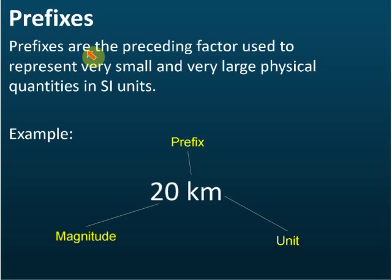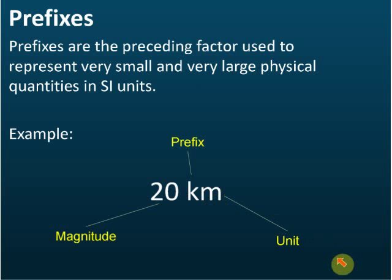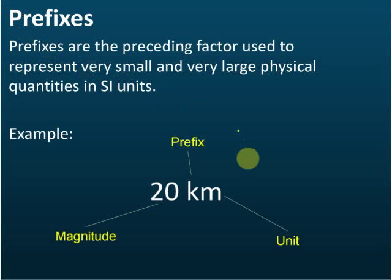What are prefixes? Prefixes are the preceding factors used to represent very small or very large physical quantities in SI units. For example, if we write 20 km, the 20 is called the magnitude — how big or small the quantity is. The 'meter' is the unit, and the 'k' in front is called the prefix. Kilo, which you've learned before, represents 1000, so 20 km means 20 thousands.